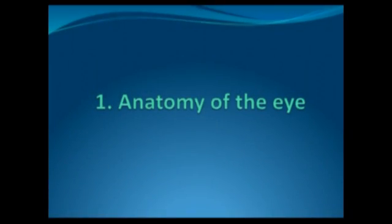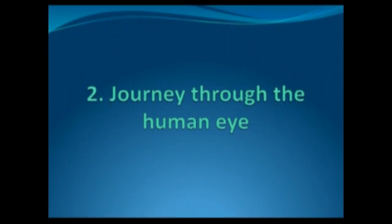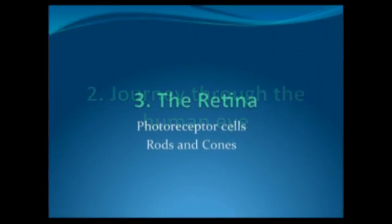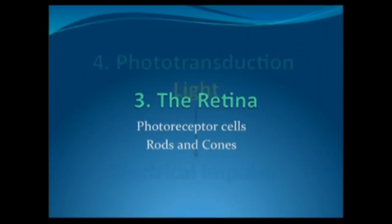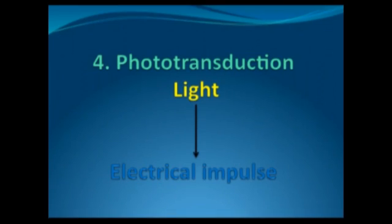Firstly, I'm going to cover the anatomy of the eye — the overall structure and function of the eye and the different components and what they do. I'm then going to talk about the journey through the human eye, covering the different processes and structures that light has to pass through to reach the light-sensitive part of the eye, which is the retina at the back of the eye. I'll then discuss the retina in more detail and talk about the light-sensitive cells, the rod and cone cells, and finally I'll cover the process of phototransduction, which requires a bit more background knowledge.